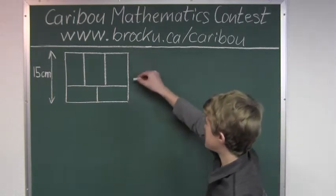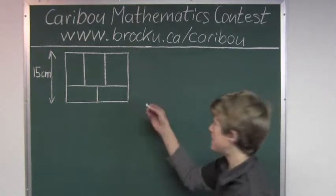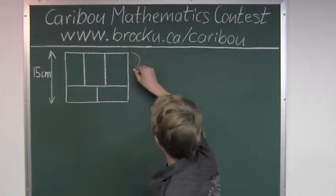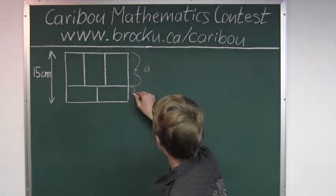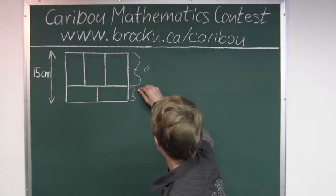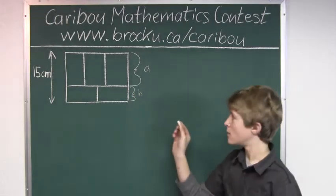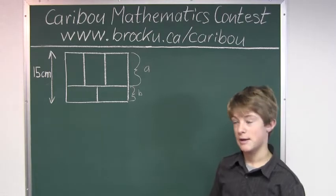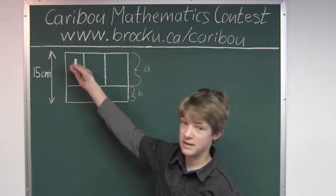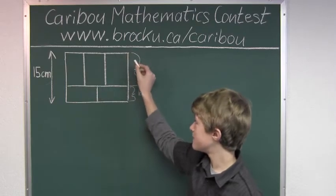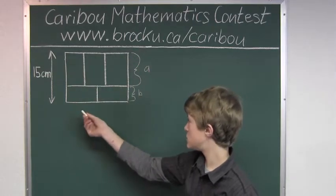Let this side be a and this side be b. So let's look at the things that we know. That is three times b up there is the same as two times a.